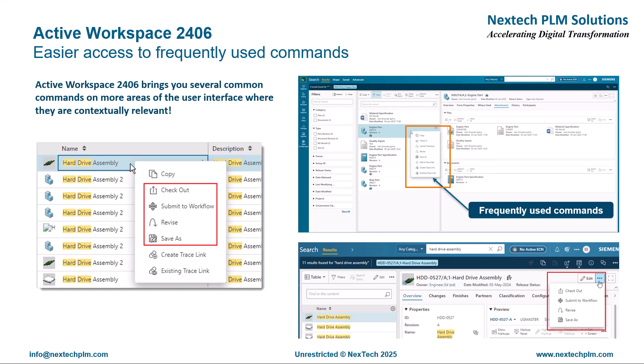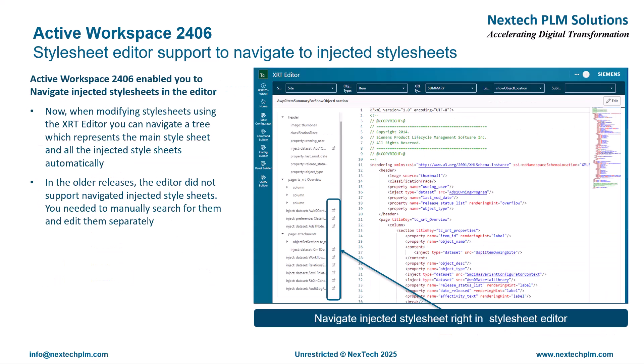To enable easier access to frequently used commands, Active Workspace 2406 brings several common commands to more areas of the user interface where they are contextually relevant. In Active Workspace 2406, the Stylesheet Editor is enhanced to enable you to navigate a tree that represents the main stylesheet and all injected stylesheets automatically, and navigate and edit those easily. This eliminates the need to manually search injected stylesheets and edit them separately, reducing the complexity and time required to manage injected stylesheets.